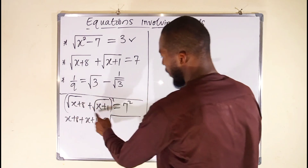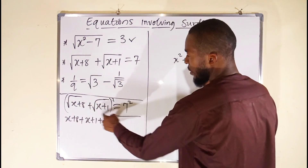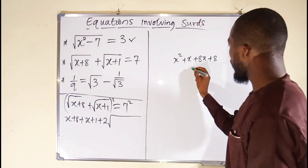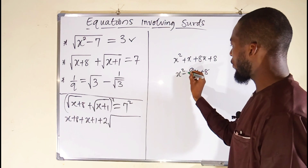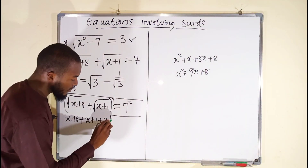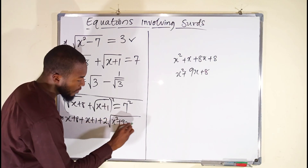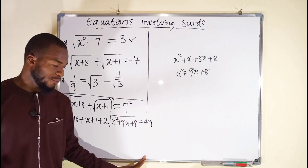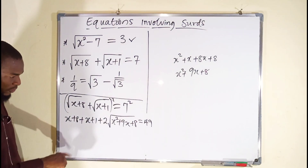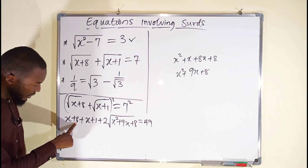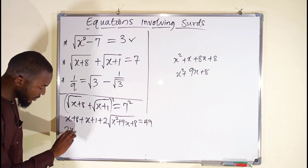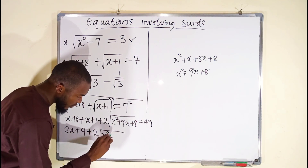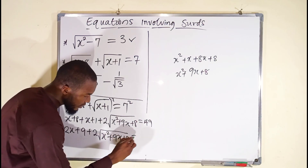Let us expand those two terms under the square root. x times x is x squared, x times 1 is x, 8 times x is 8x, and 8 times 1 is 8. Collecting the middle terms gives 9x, so the expression under the square root is x squared plus 9x plus 8. The full equation becomes: x plus 8, plus x plus 1, plus 2 times square root of x squared plus 9x plus 8, equals 49, because 7 squared is 49.